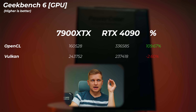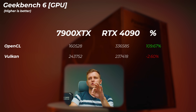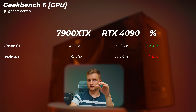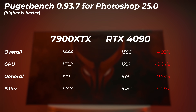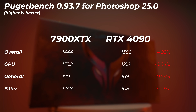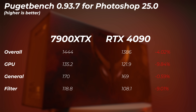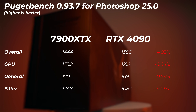Looking at Geekbench 6, the 4090 is about 109% faster in the OpenCL score, but about 2.6% slower in the Vulkan score — so interestingly, Vulkan performs better on AMD. In Photoshop, the 4090 is actually 4% slower in the overall score, and the GPU score is about 10% slower on the 4090. The GPU filter score is also 9% slower on Nvidia. So AMD gets quite a big win here. In Lightroom Classic, I couldn't isolate GPU-accelerated effects, so I'd call them roughly on par.